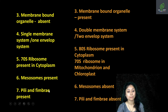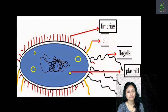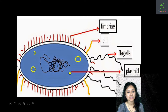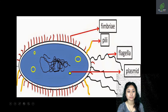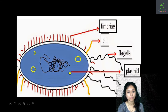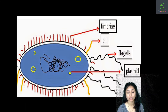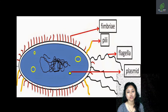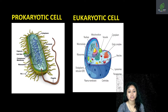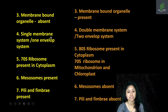Next are pili and fimbriae. Pili and fimbriae are the outgrowths of the plasma membrane. These structures help in adhesion or attachment of the organism, and they are composed of pilin protein. Such structures are absent in case of eukaryotic cells.